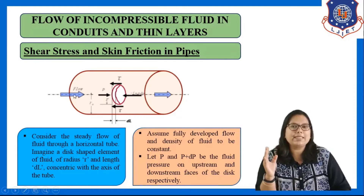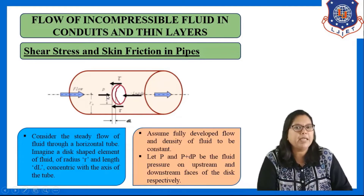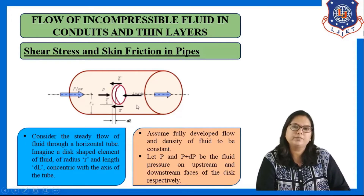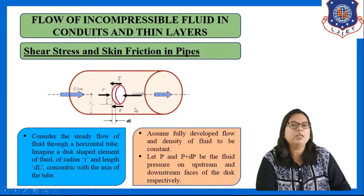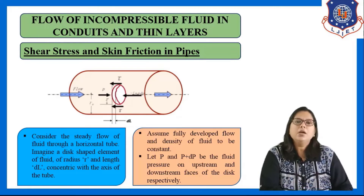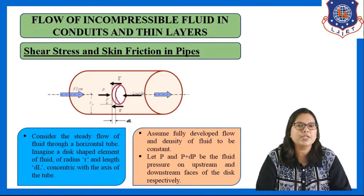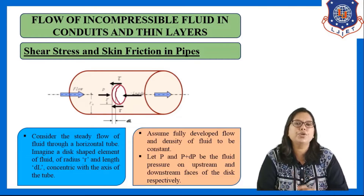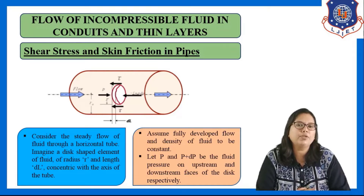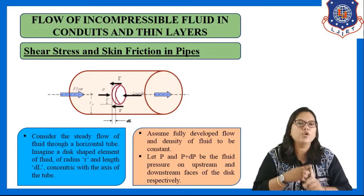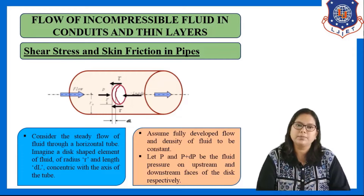The pressure at the upstream face of the disc is P, and the pressure at the downstream face is P plus dP. To derive the relation between shear stress and skin friction, we take two assumptions: the flow is fully developed flow, and the density of the fluid is constant.